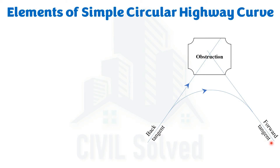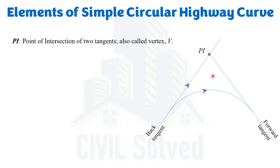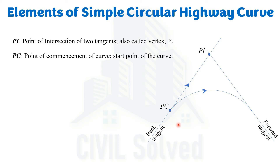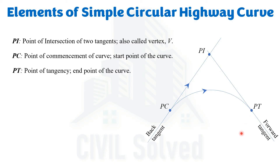Now let's discuss the different elements of a simple circular curve. The point where the back tangent and the forward tangent cross each other is named the Point of Intersection (PI), also called the vertex. The point where the curve starts is named PC — the Point of Commencement — which is the start point of the curve. The point where the curve ends is named PT — the Point of Tangency — which is the end point of the curve.